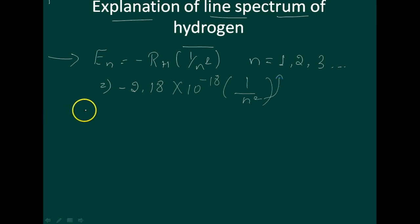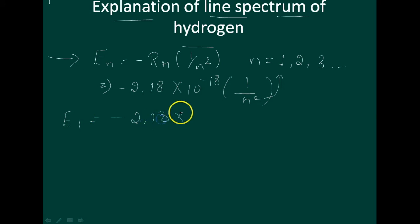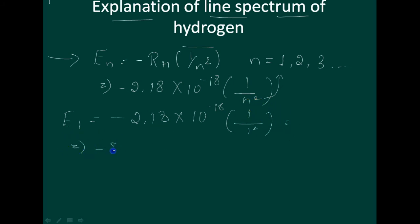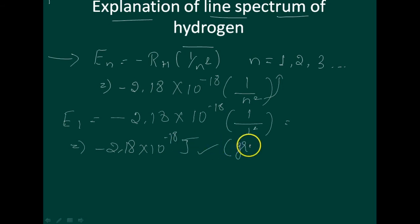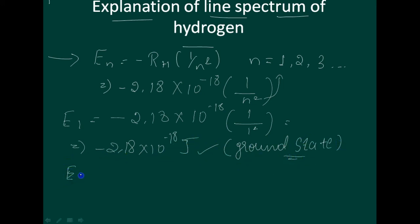For the energy of the lowest state, also called the ground state, when you apply n equal to 1, you get minus 2.18 into 10 raised to minus 18 divided by 1 squared, which gives minus 2.18 into 10 raised to minus 18 joules. This is called the ground state. For E2, where n is equal to 2, you apply it and get minus 10 raised to minus 18 joules.